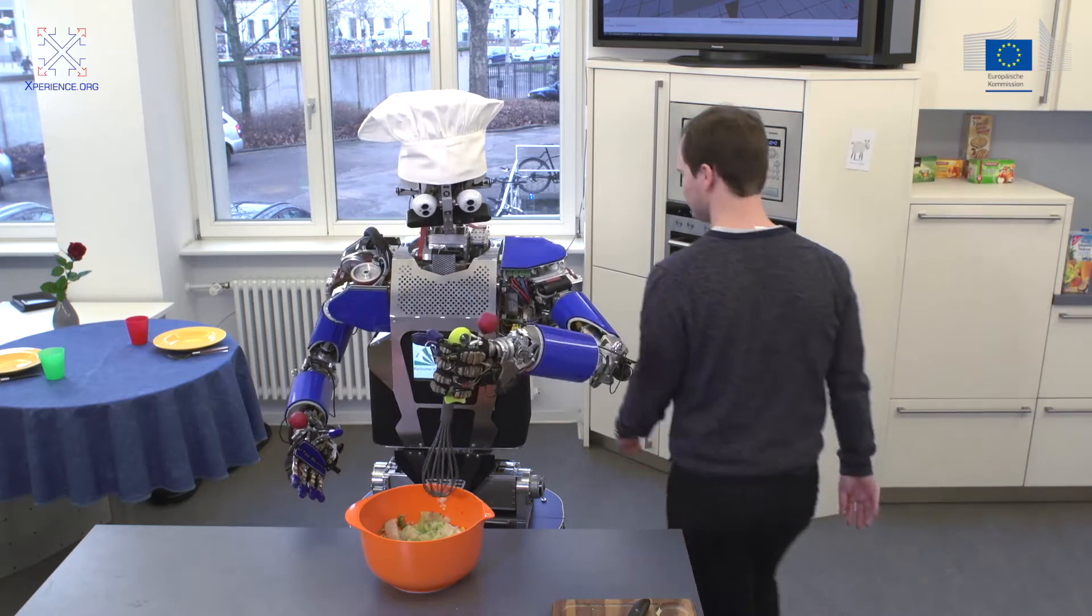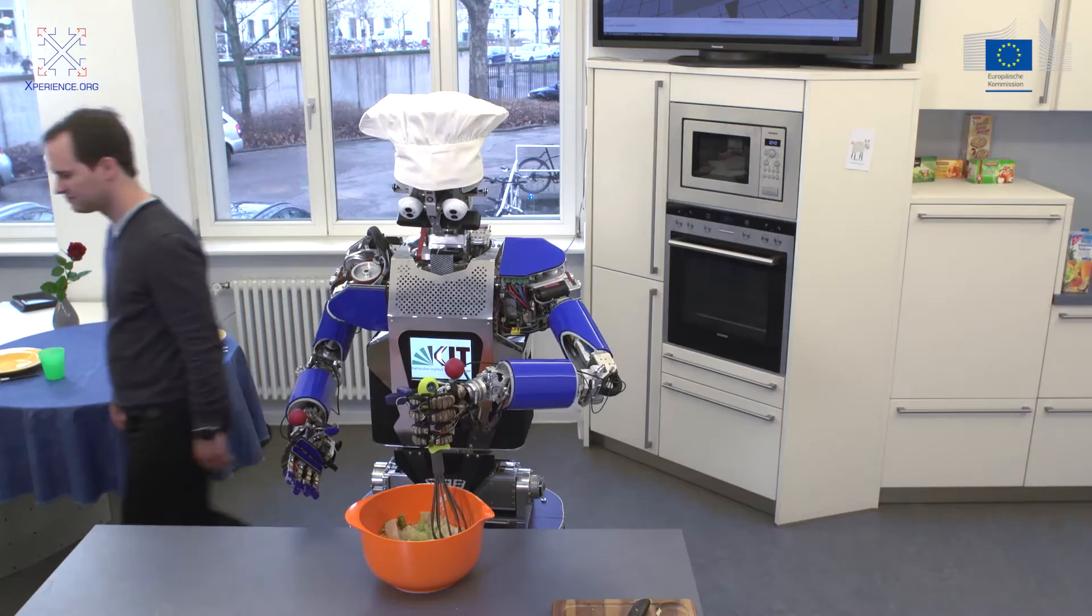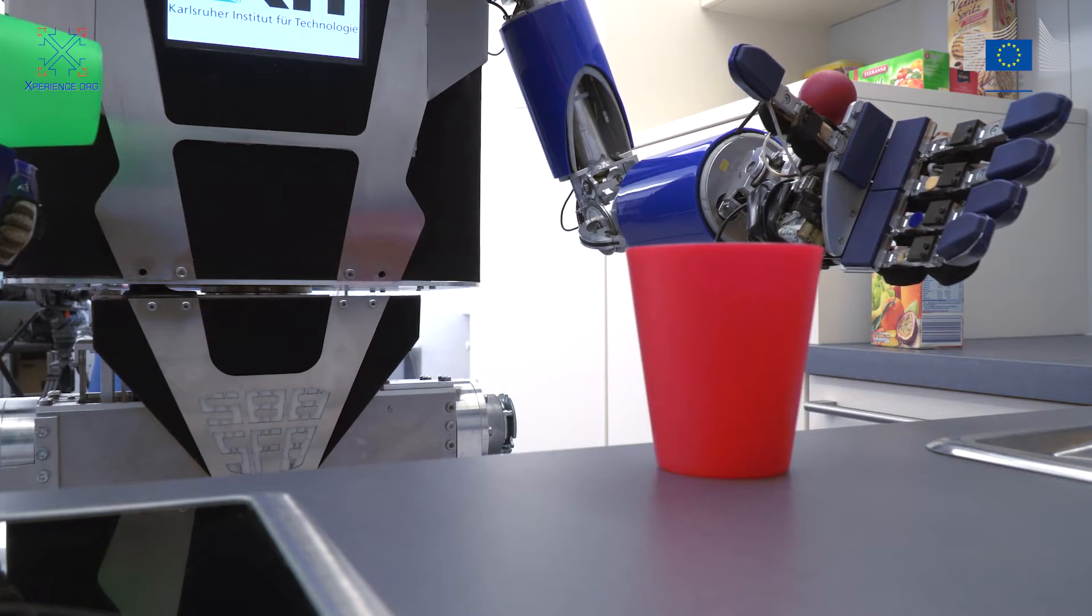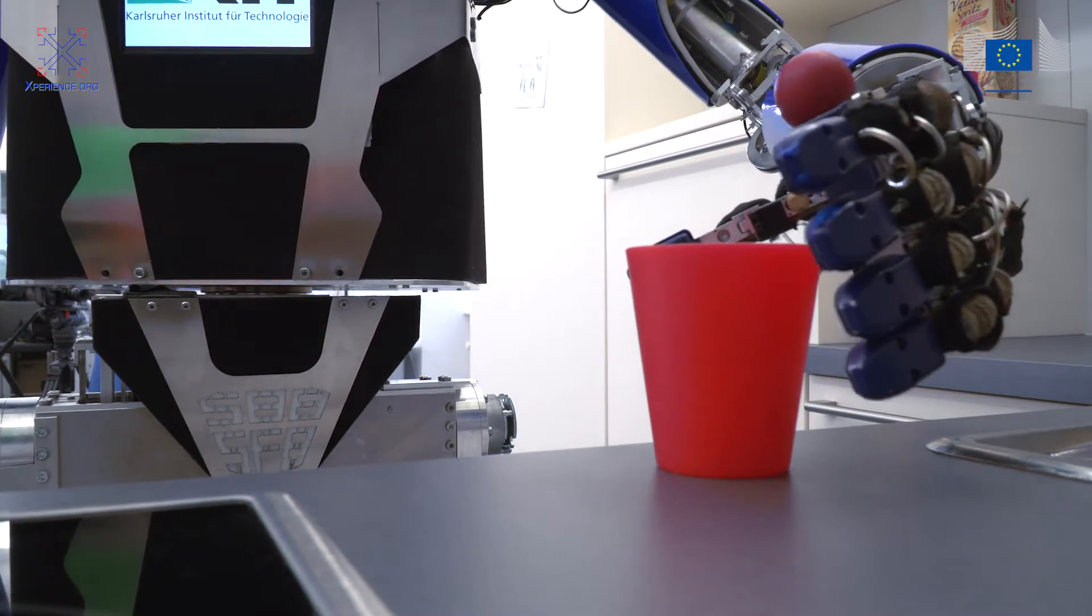However, once some knowledge base exists, a robot can make use of it to improve learning efficiency and speed. This happens to our children at the age of around three